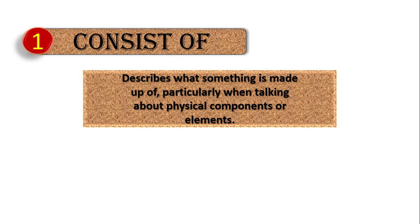We use 'consist of' when we are talking about ingredients. For example, if there is a recipe, you want to talk about what ingredients it is made up of — such as rice, chicken, and spices. We mention its elements, like potatoes or other ingredients. We use 'consist of' when listing the ingredients or components something contains.